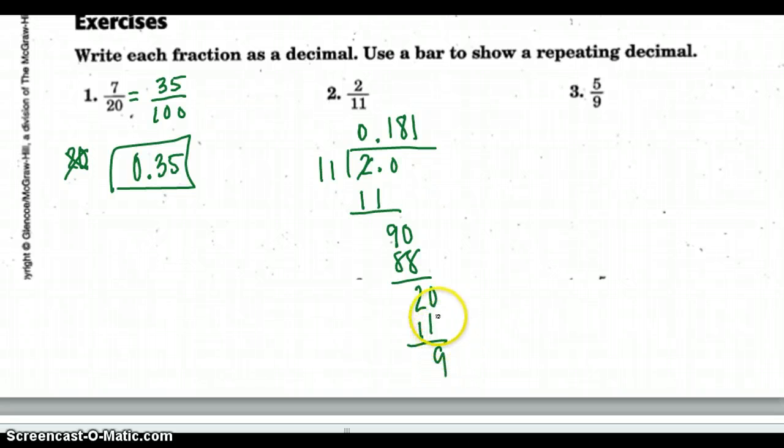It looks like we're going to have 2 digits repeating. When I bring down my 90, it goes 8. It's going to keep going in that pattern, so 2 elevenths is equal to 0.18 with the 18 repeating.